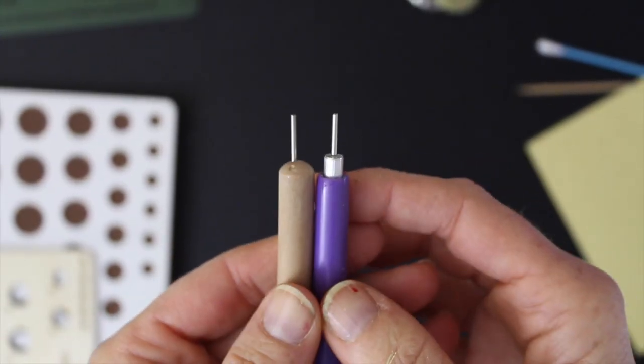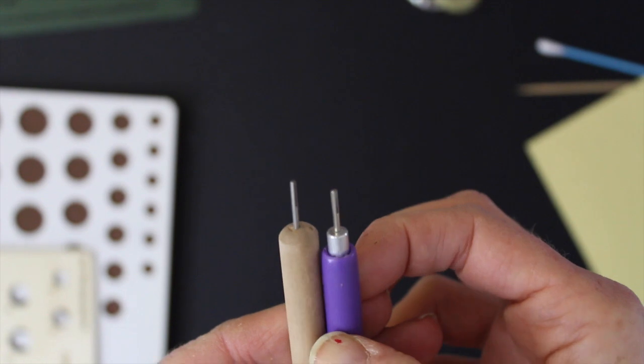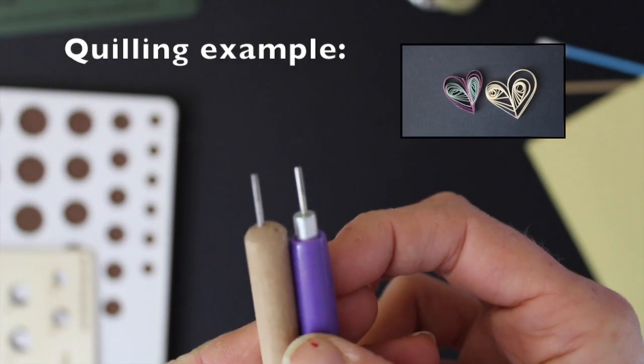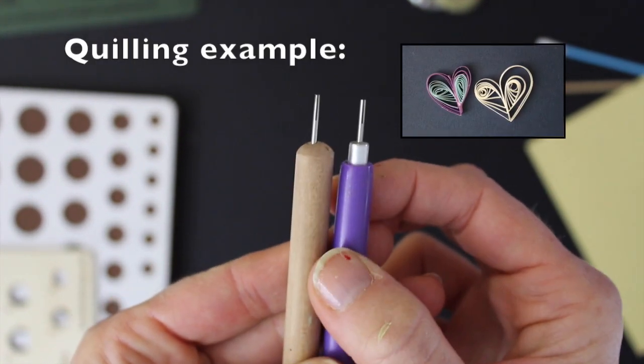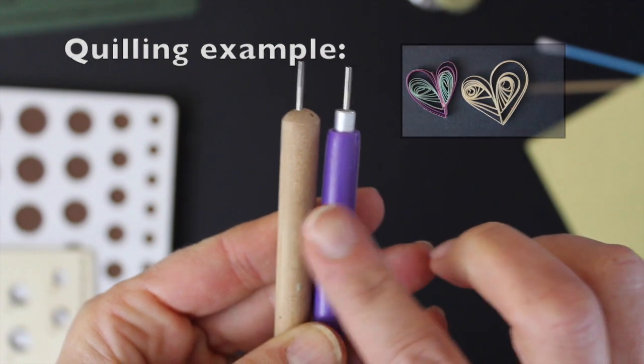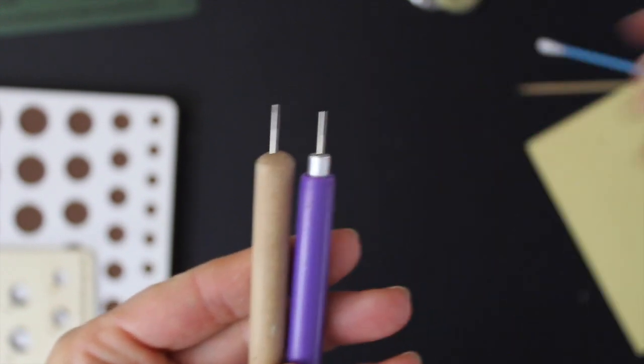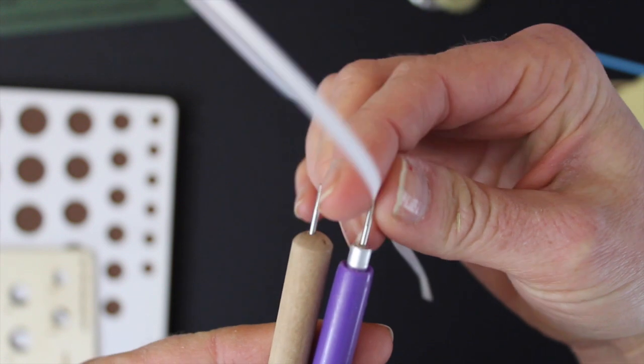First let's go over some basic supplies. Usually if you're doing quilling you need a quilling tool, and you can see by the ones in my hand that they can have a wood handle or a plastic handle, but the big thing is that they have a slit in them.